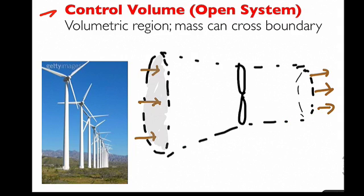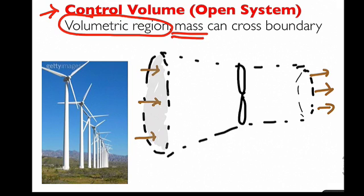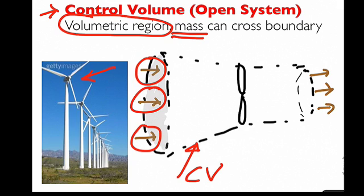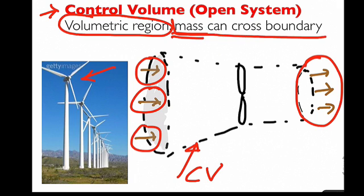By contrast, when an engineer selects a control volume, we select a volumetric region and allow mass to flow across the boundary. For example, with this wind turbine, if we want to analyze its efficiency, we select a control volume. I've sketched a control volume where air flows in across one boundary and air flows out across another. The key distinction of the control volume is that mass can cross the boundary.